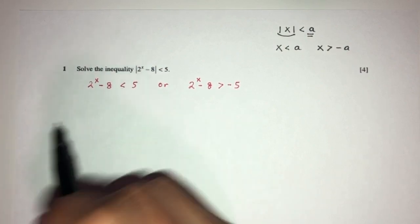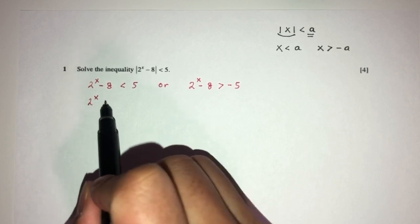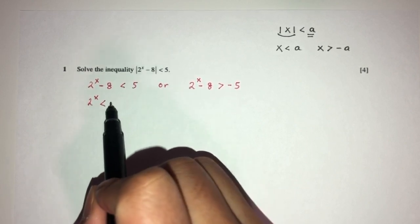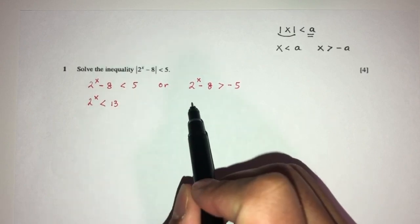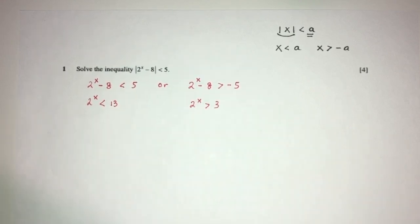Now, what's next? We will try to make x become subject, so you will have 2 power x less than, send this over here, 5 plus 8 should be 13. And here we have, same steps, minus 5 plus 8 should be 3.